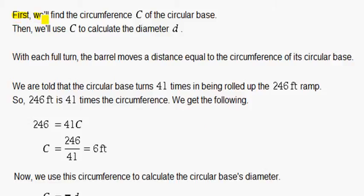First, we'll find the circumference C of the circular base. Then, we'll use C to calculate the diameter d. With each full turn, the barrel moves a distance equal to the circumference of its circular base.